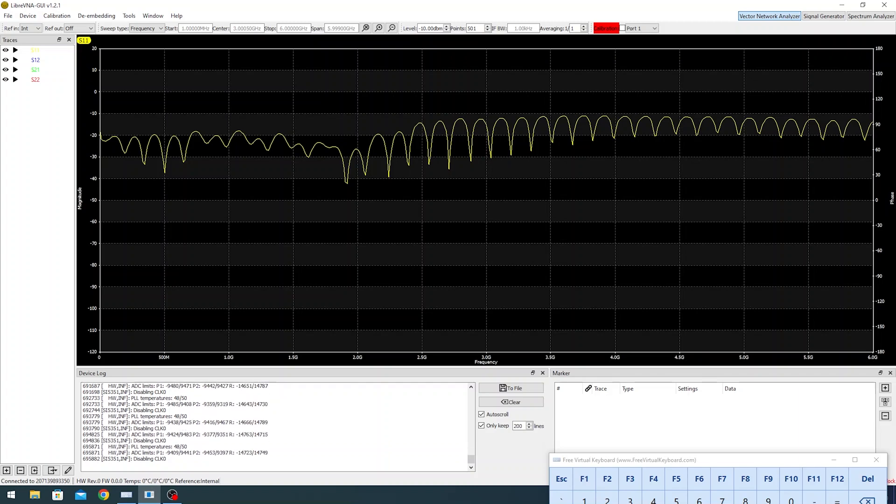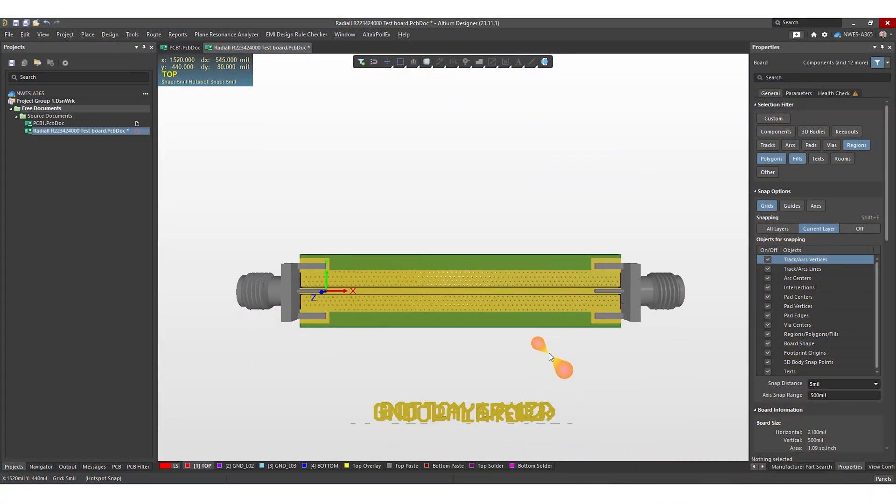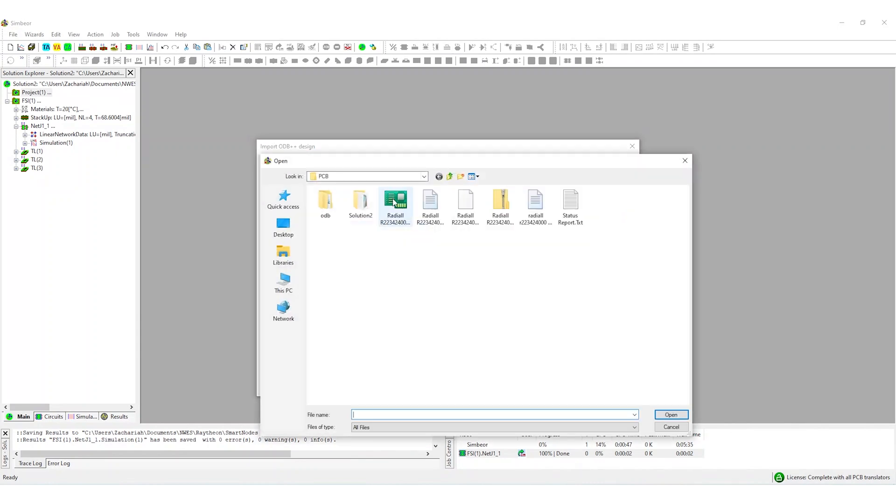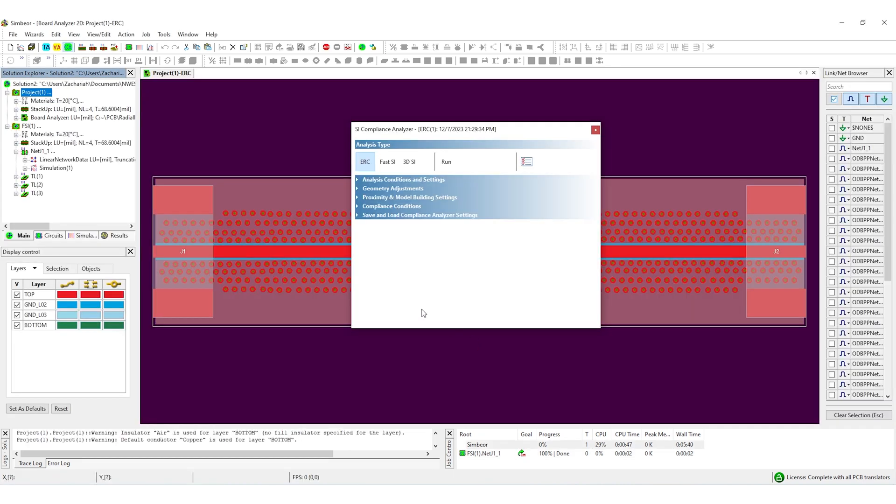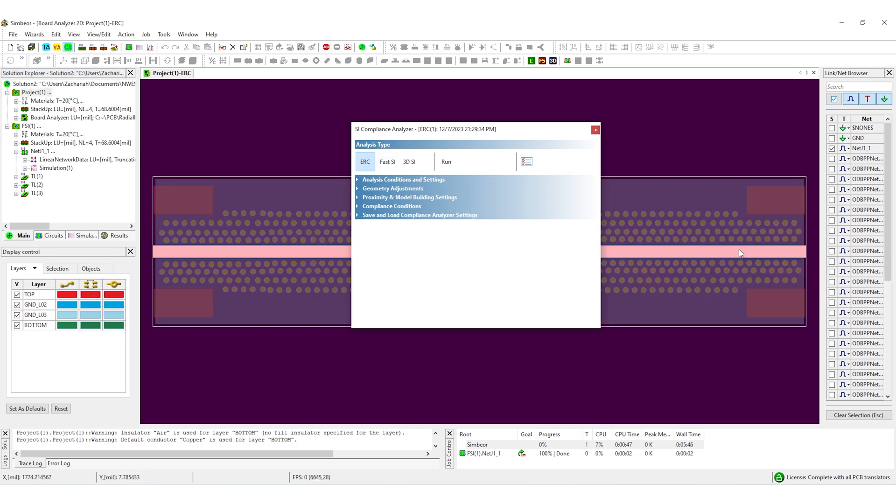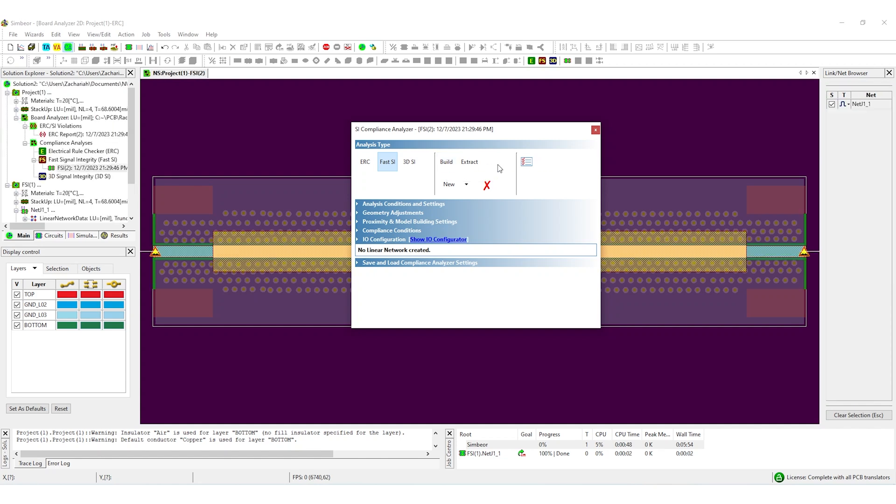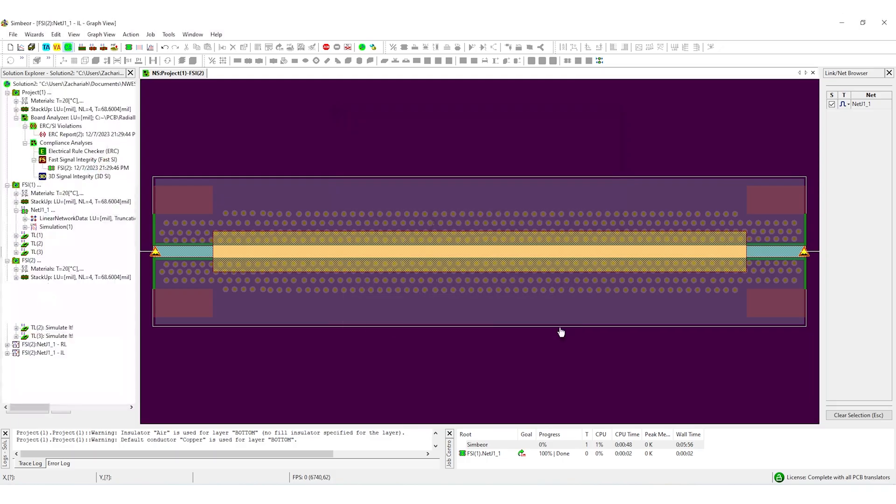Now that we've gotten some measurements with the Libre VNA, I think it's always good to just do a quick sanity check in a simulator to make sure that the results are within the range, roughly within the range that you expect. So what I've done is I've done an export to ODB++. I'm going to take this into Symbiore, and we'll do a quick S-parameter simulation just so that we can get the S11 S-parameter, and we can see how that varies over frequency. So here I just need to select this one net, we'll do a quick ERC, and then we will do a fast SI simulation, extract that, and then we can get the S-parameters pretty quickly.